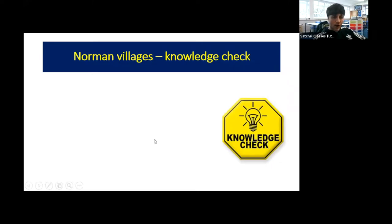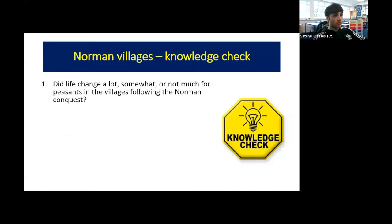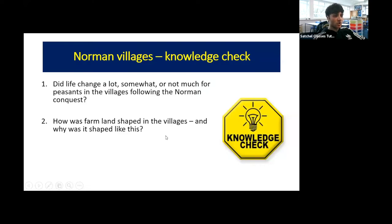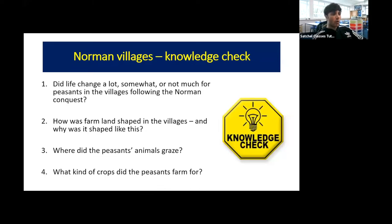Let's pause here and do a little knowledge check. Question one: did life change a lot, somewhat, or not much for peasants following the Norman conquest? Question two: how was farmland shaped in the villages, and why? Question three: where did the peasants' animals graze? Question four: what kind of crops did the peasants farm? Pause the video, write down full-sentence answers, and then we'll check them.